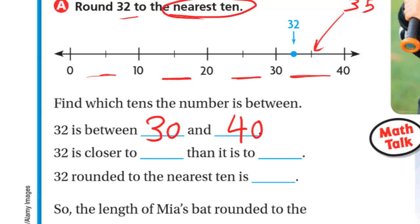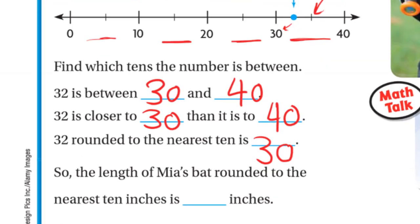So 32 is between 30 and 40, and it is closer to 30 than it is to 40. So 32 rounded to the nearest ten is 30. The length of May's bat rounded to the nearest ten inches is 30 inches.